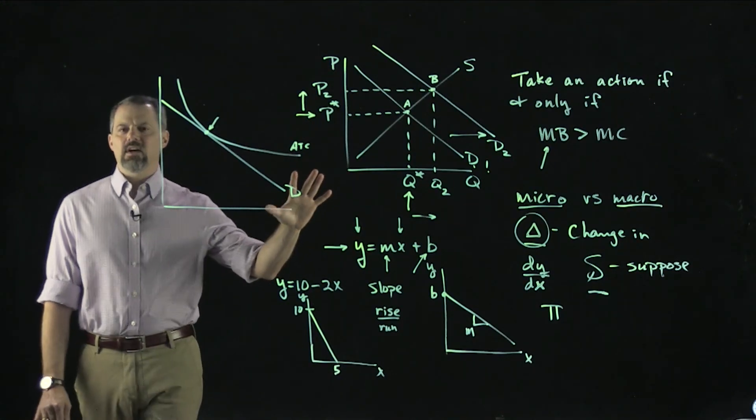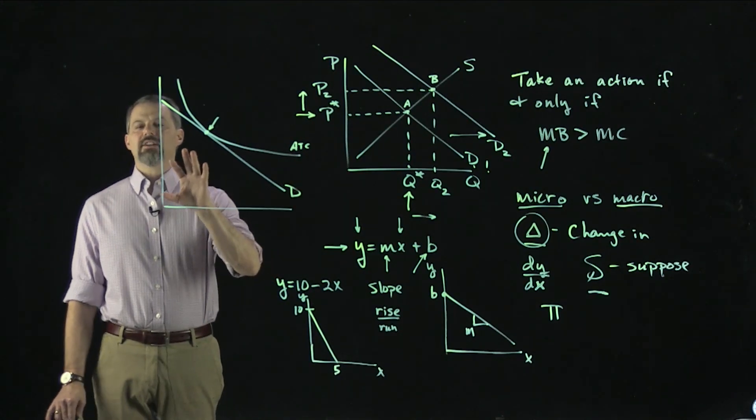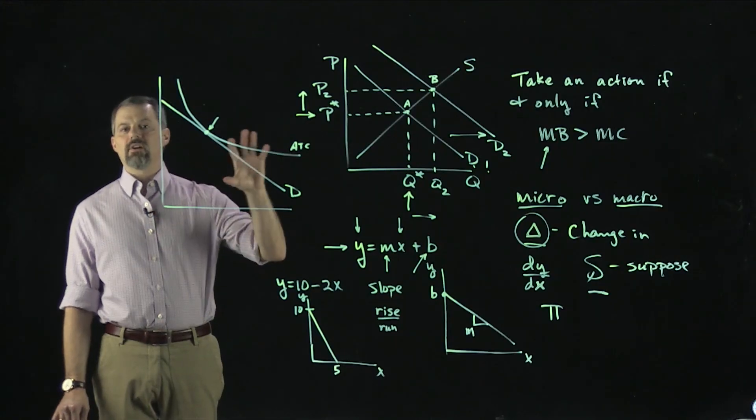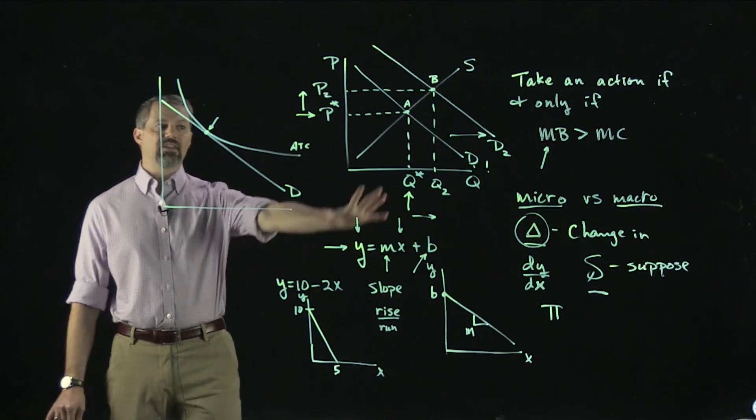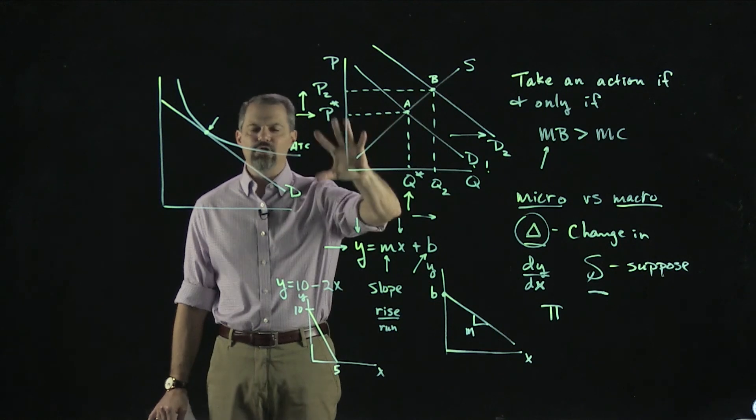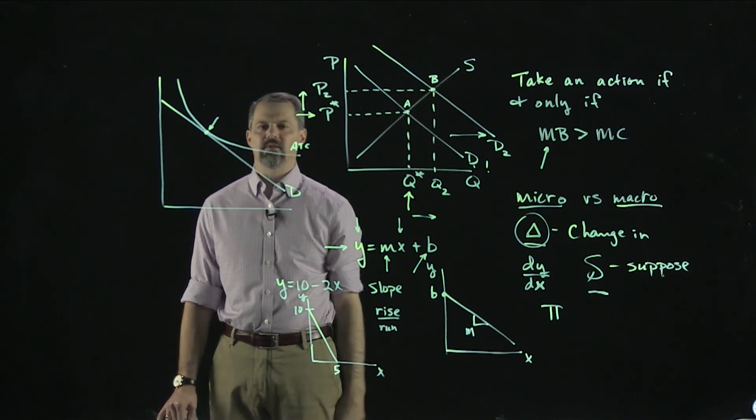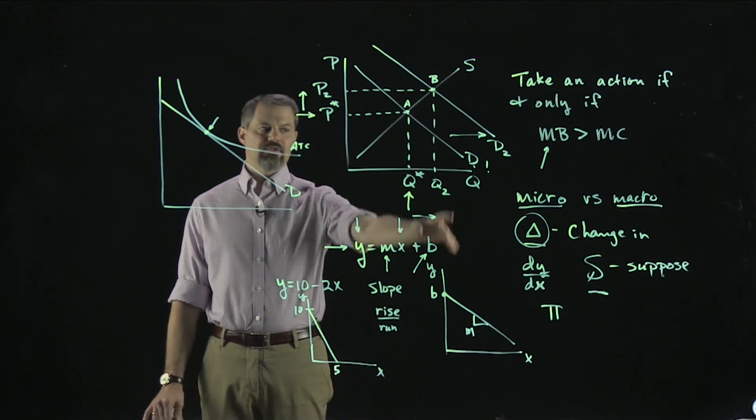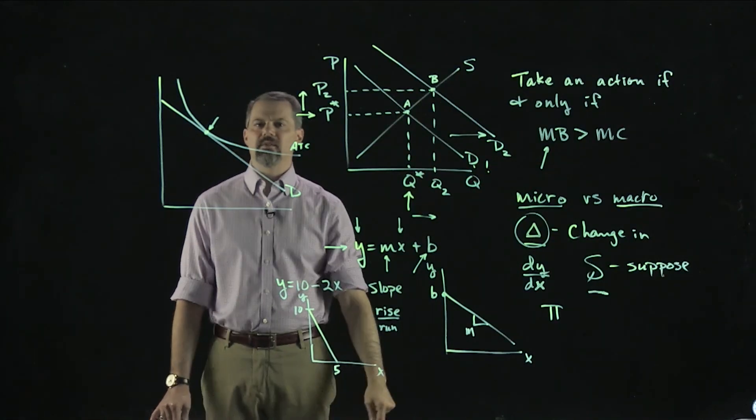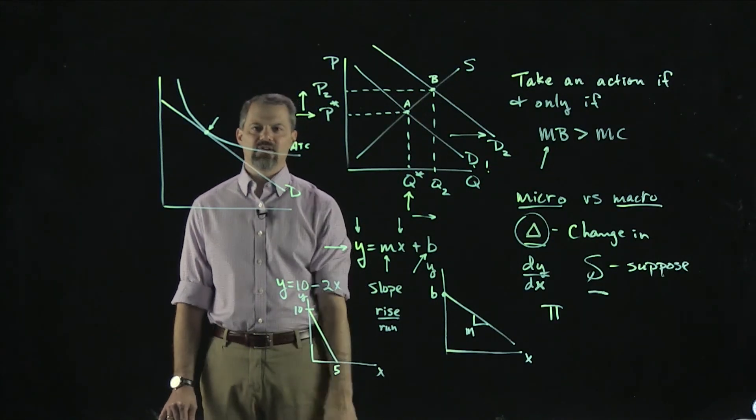This is just kind of an introduction to intermediate micro. What we're going to do in our next video is start by thinking about this demand and supply model. We'll review how it works, the determinants of demand and supply, and then we'll start working through some of the math of it. I will see you in the next video.